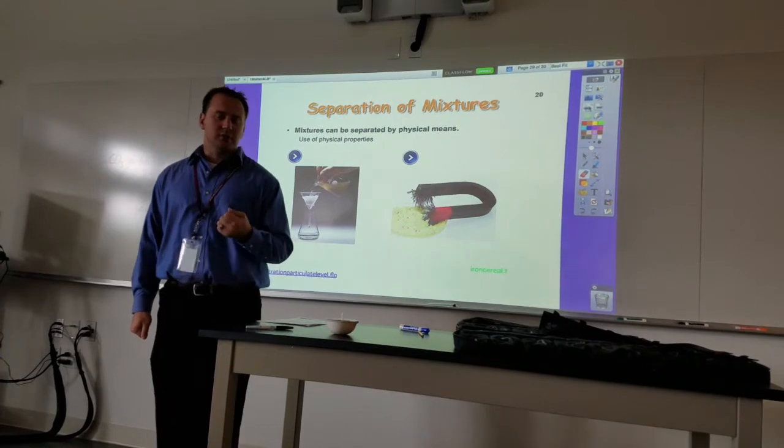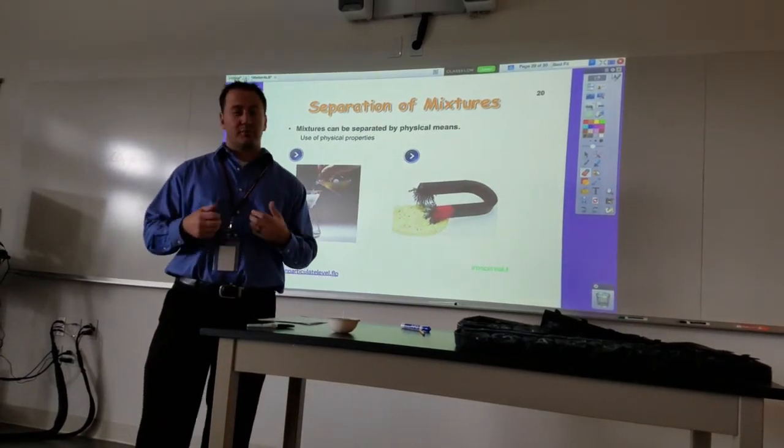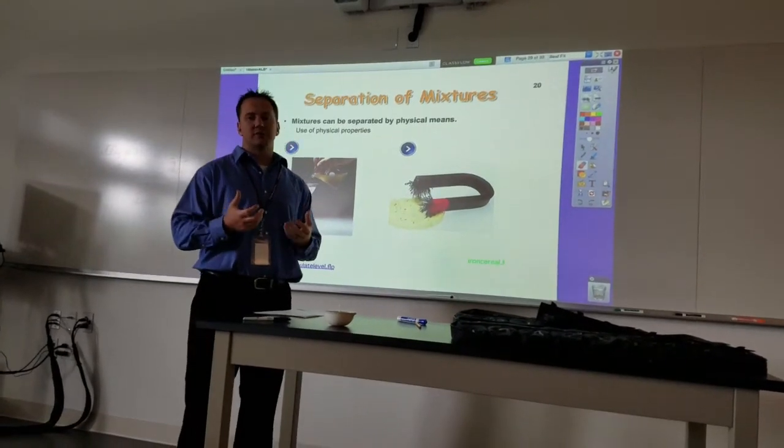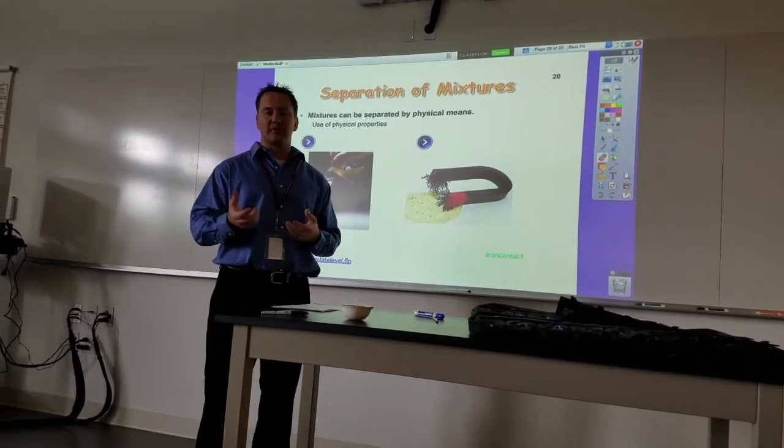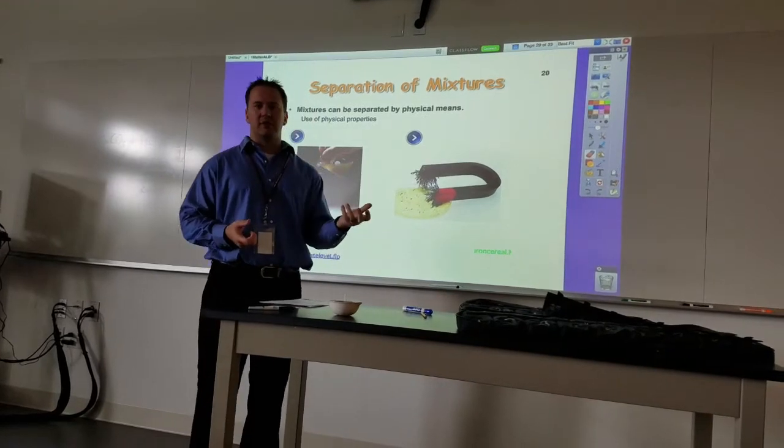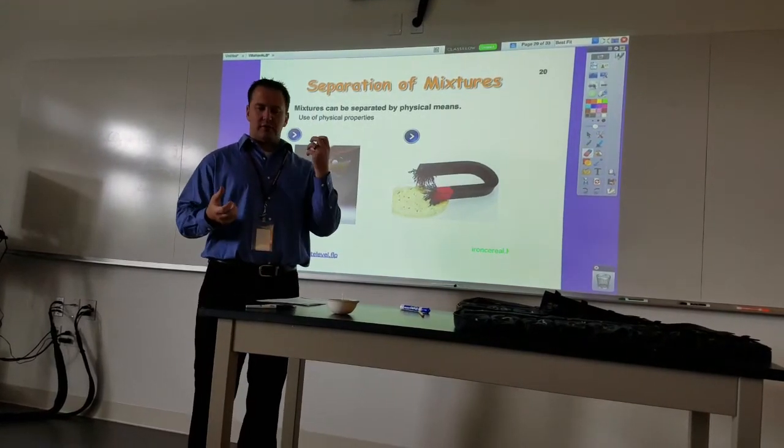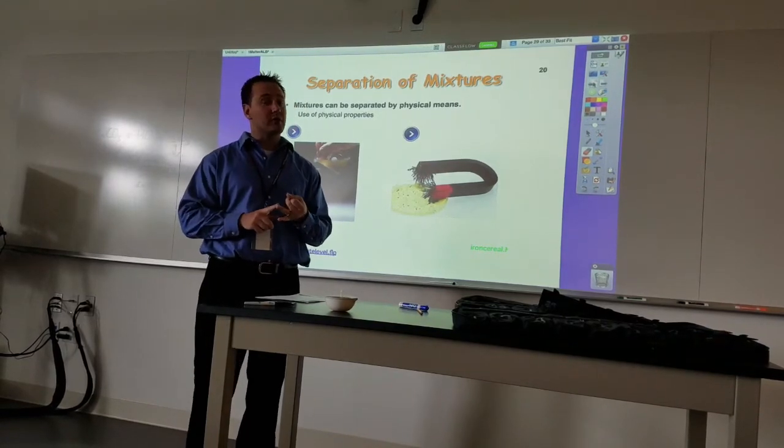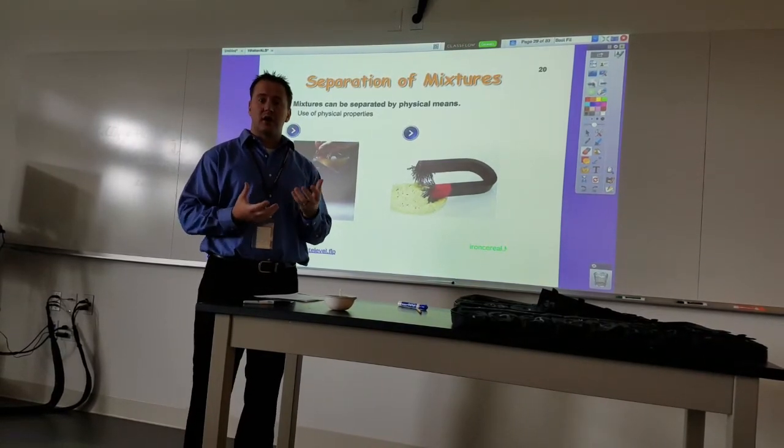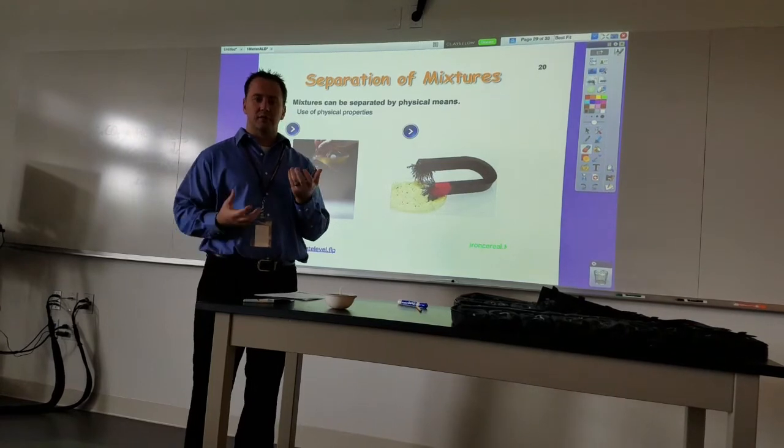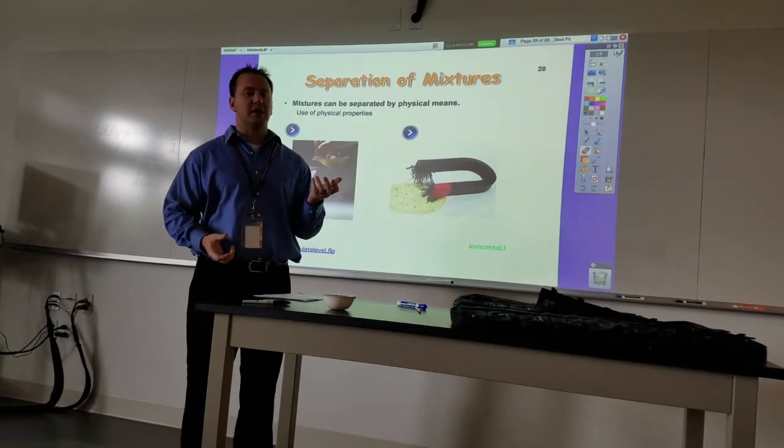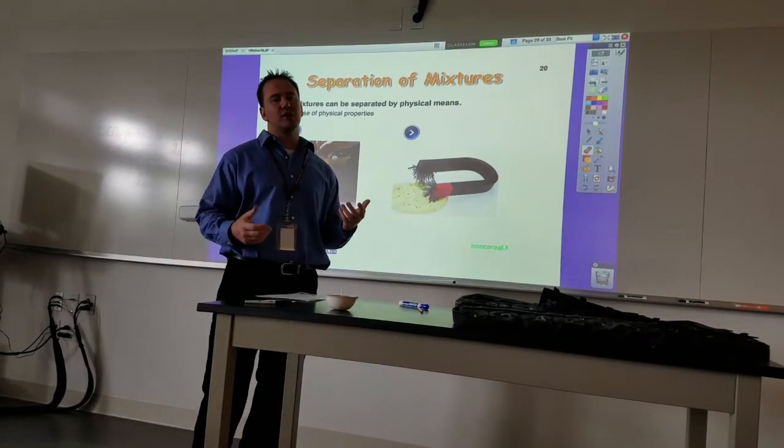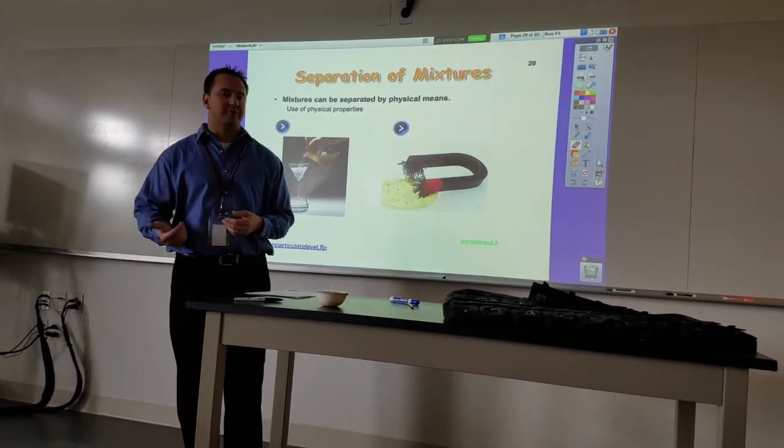Another possible means of separating things physically would be performing an extraction. An extraction happens all the time. When you make your coffee, you have a coffee bean that's ground up. You pass hot water through it, and some of the material—caffeine and all the great flavors—gets caught up in the water layer, and the rest gets left behind. Whatever's soluble in water will come out with the water, and that's the coffee you drink, and everything that's not soluble in water will get left behind.